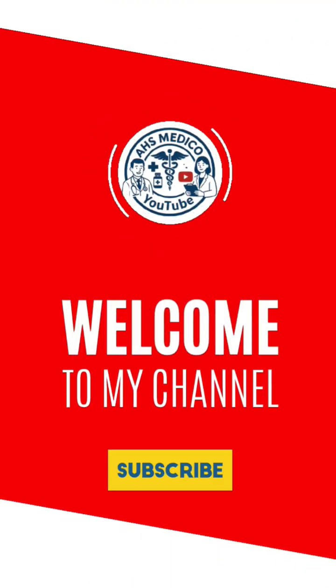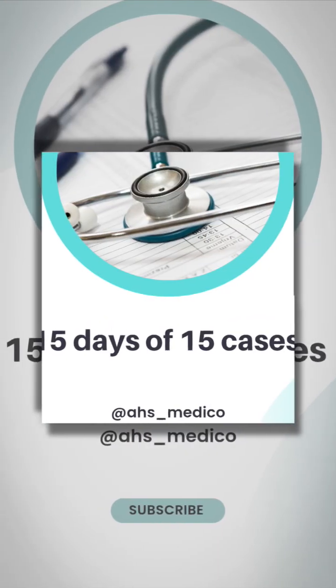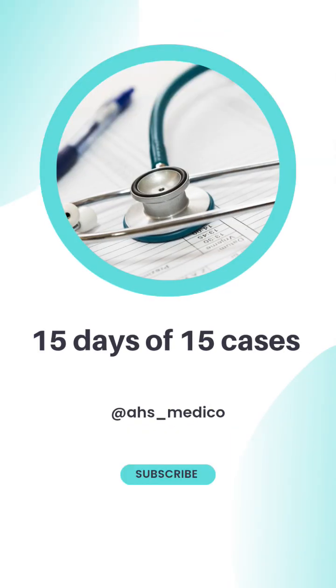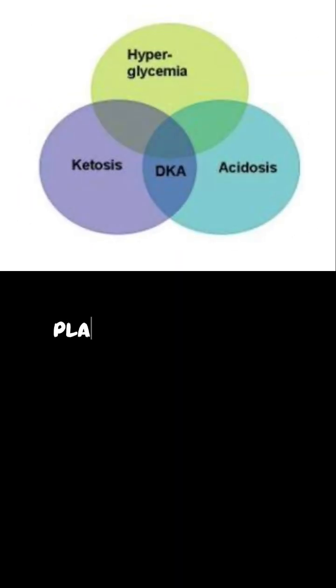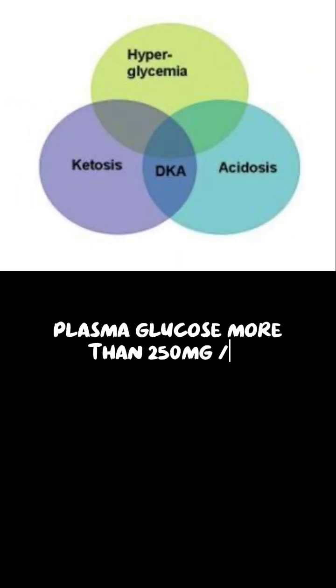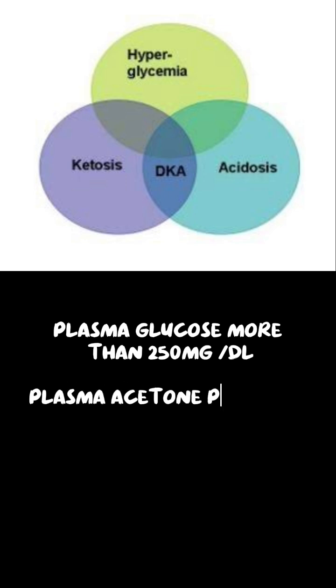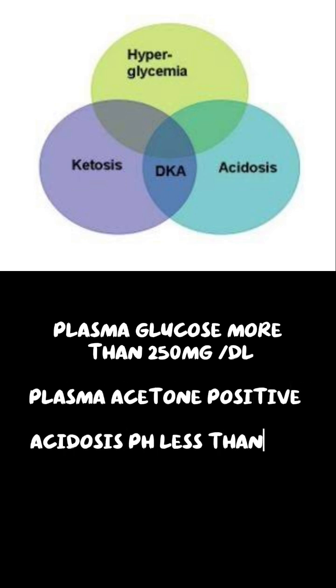Welcome back to AHS Medico, 15 days of 15 cases. Today's case is DKA — Diabetic Ketoacidosis. DKA is characterized by a plasma glucose level of more than 250 milligrams per deciliter, pH less than 7.35, and bicarbonate less than 15.